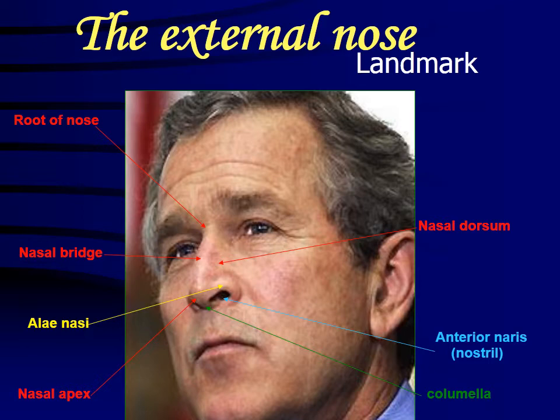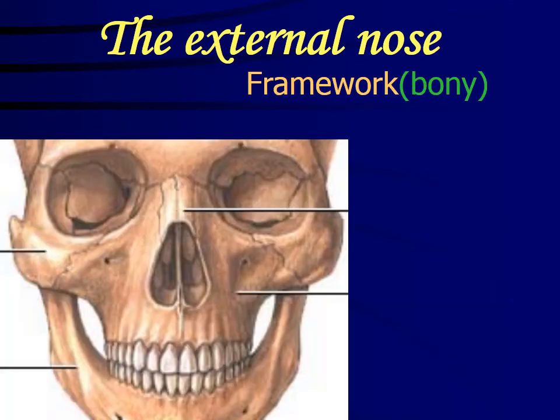Then we have the columella — the part between the nostrils. And then we have the ala nasi, which is a slightly protruding part that also forms the lining of the nostril, giving it shape. Then we have the nasolabial fold, mentioned here — it is the side portion of the nose in the form of a curve.